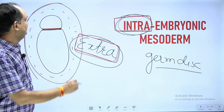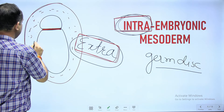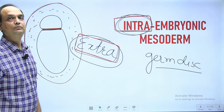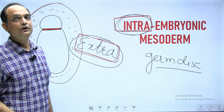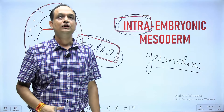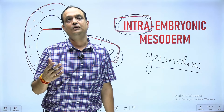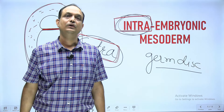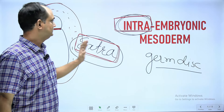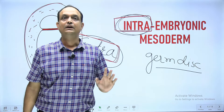The extra embryonic mesoderm, by contrast, does not have any adult derivative. It develops outside the embryonic disc and forms structures like the umbilical cord and supporting tissues required for the nutrition of the developing embryo.